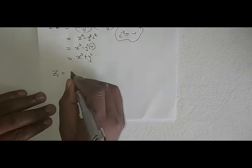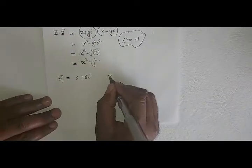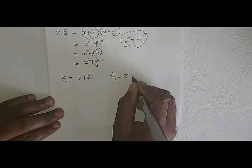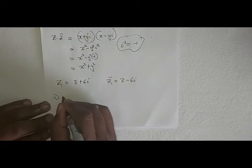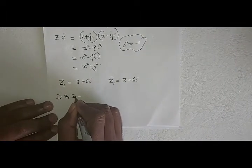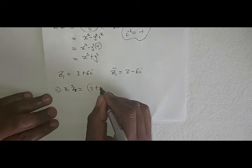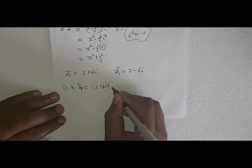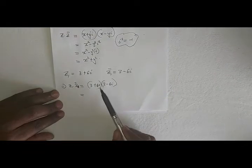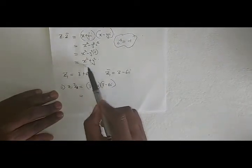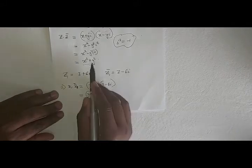For example, if Z1 equals 3 plus 6i, then the conjugate Z1-bar equals 3 minus 6i. If we multiply Z1 by Z1-bar, it equals 3 plus 6i multiplied by 3 minus 6i. Using our formula, X is 3 and the imaginary part is 6, so it equals 3 squared plus 6 squared.